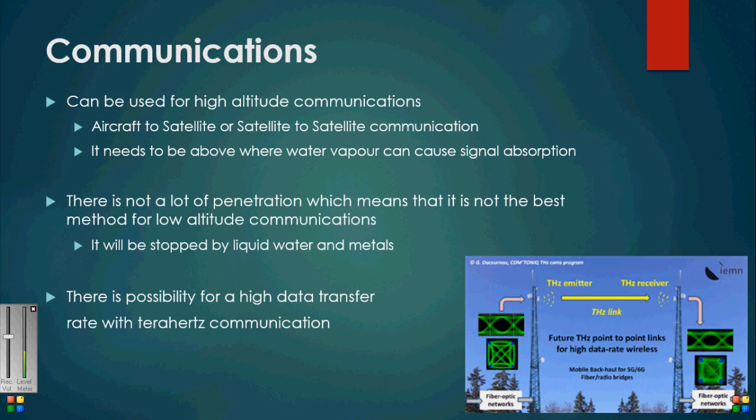Finally, we come to the communication application. It is only useful at high altitude, because water vapor will absorb the radiation and ruin the signal in the atmosphere's dense lower layers. We can see in this image an example of a terahertz communication system. The tower on the left transmits the signal to the tower on the right, which receives the signal very quickly, allowing for a high data transfer rate.